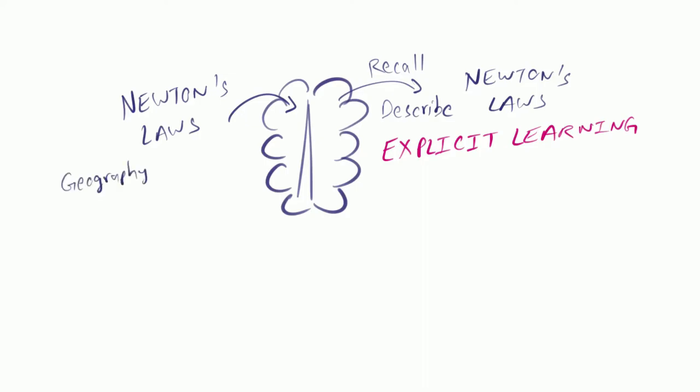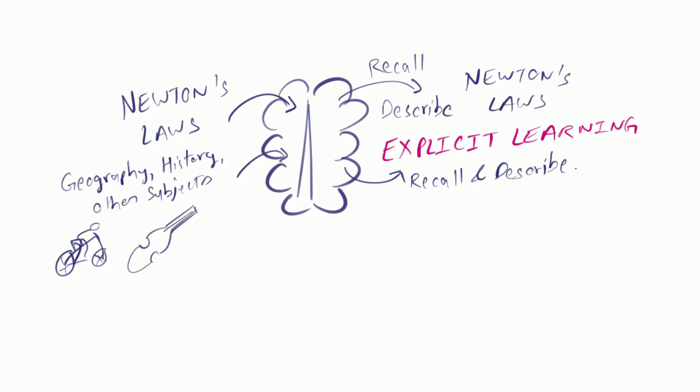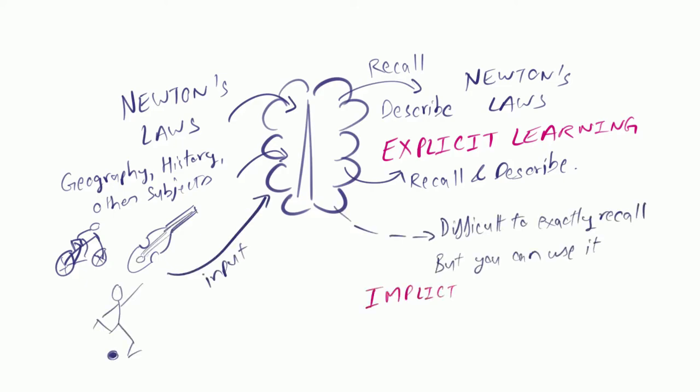For example, what you learnt in your school in history or geography is explicit learning because you can later recall and describe what you learnt. However, if you are not able to exactly recall what you learnt but you are able to use that knowledge, for example, riding a cycle or playing a musical instrument or kicking a ball, this is called implicit learning.